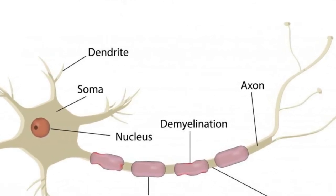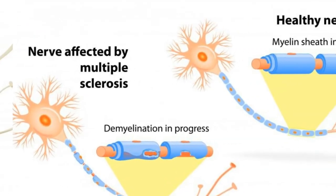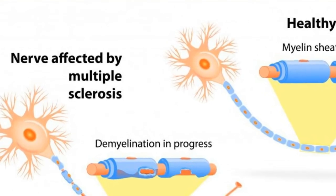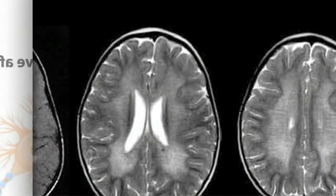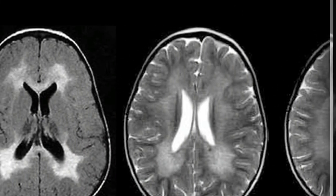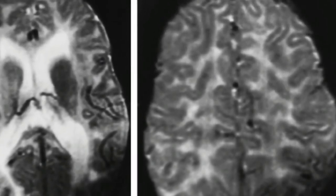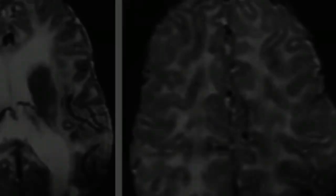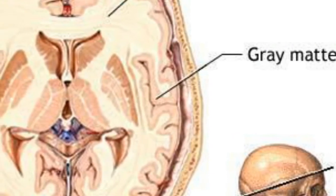Injuries to subcortical white matter do not always cause life-threatening problems, and in some cases they may be treatable or even reversible. The amount of treatment and the prognosis for any of these varies depending on the injury or disease, as well as the unique state of a patient. In general, white matter injuries are at least somewhat treatable, but the majority also cause permanent damage and are not fully reversible. Treatment for most diseases usually involves attempting to slow their progression, rather than trying to repair the damage they cause.